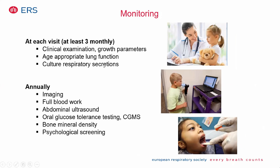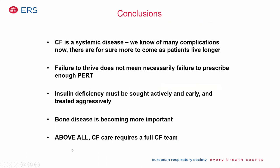Monitoring schedule: at minimum every three months, assess growth parameters, lung function, and culture respiratory secretions. Annually, screen for all other CF complications. In conclusions, we must prevent cardiovascular complications by avoiding excessively fatty diets, think early about CF-related diabetes, and involve the whole multidisciplinary team.